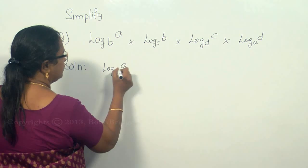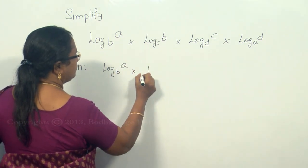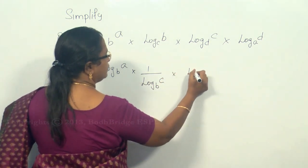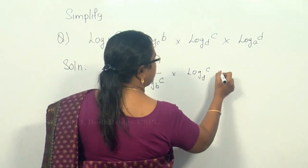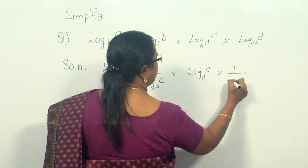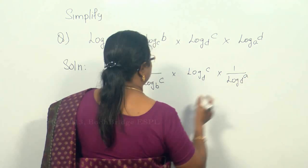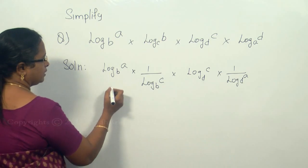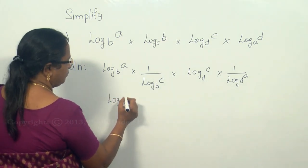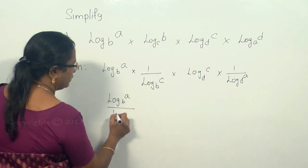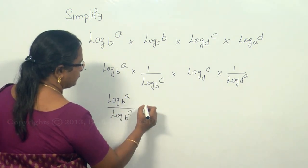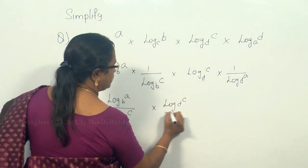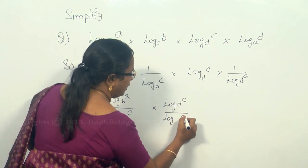Here log a base b can be written as 1 by log c base b, into log c base d, and this is 1 by log a base d. Now we can see the bases are the same, so we can combine. In terms of log m by n, this is log a base b divided by log c base b, into log c base d divided by log a base d.